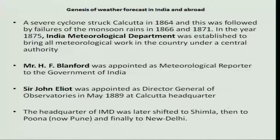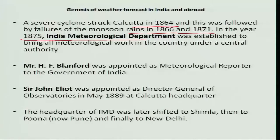Regarding the establishment of the India Meteorological Department: a severe cyclone struck Kolkata in 1864, followed by the failure of monsoon rains in 1866 and 1871. In the year 1875, the India Meteorological Department was established to bring all meteorological work in the country under a central authority.